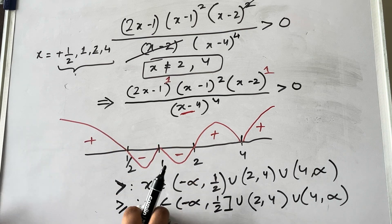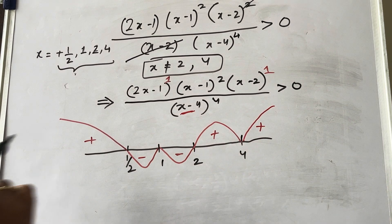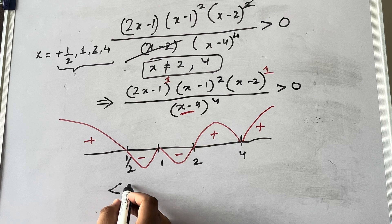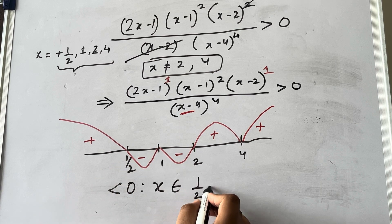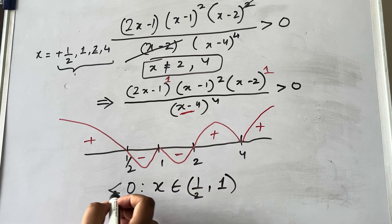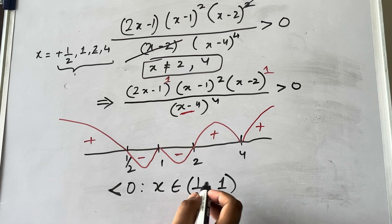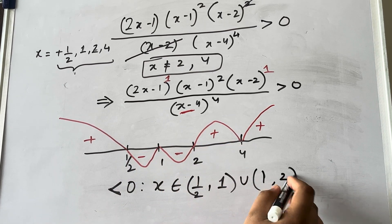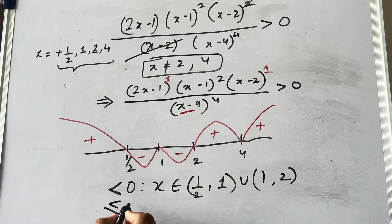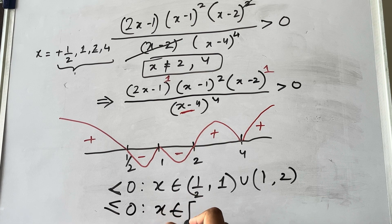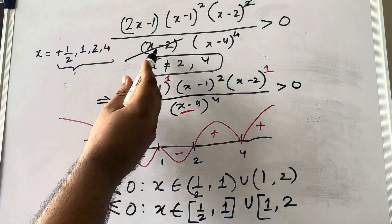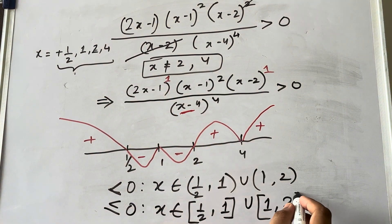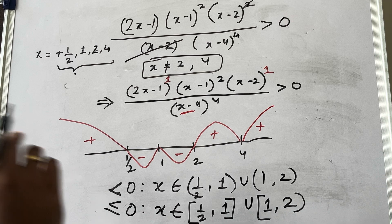For less than 0, you take the negative part: x ∈ (1/2, 1) ∪ (1, 2). For less than or equal to 0, you include 1/2 and 1 since they are not in the denominator: x ∈ [1/2, 1] ∪ [1, 2). Note that 2 cannot be included because it was in the denominator and makes the expression undefined.